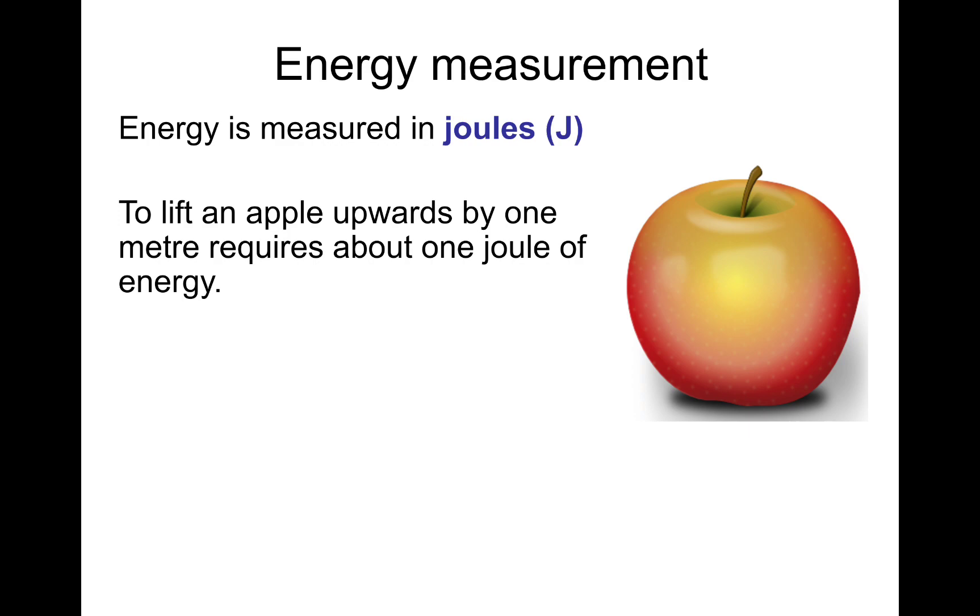So if you were to lift an apple upwards by one meter, it requires about one joule of energy. If you grab an apple, move it up a meter, it's about one joule of energy. And it would gain gravitational potential energy. One kilojoule means a thousand. Megajoule means a million.